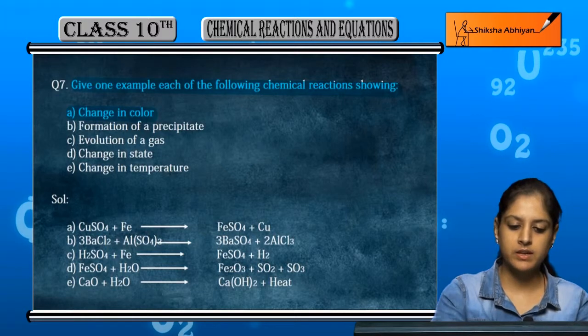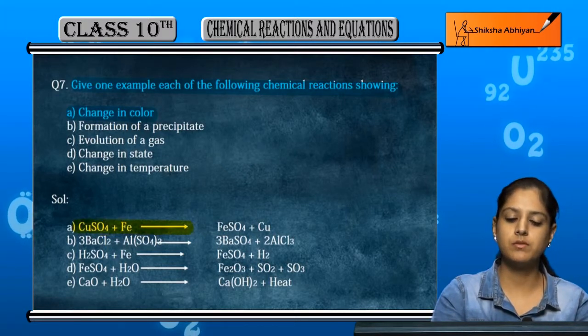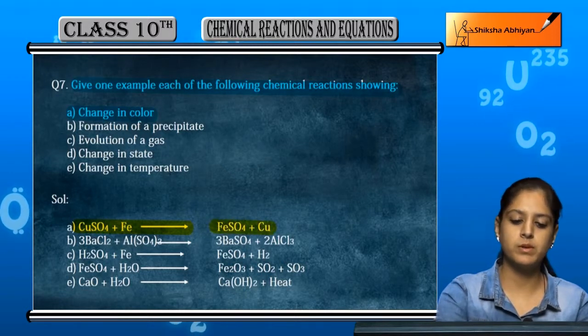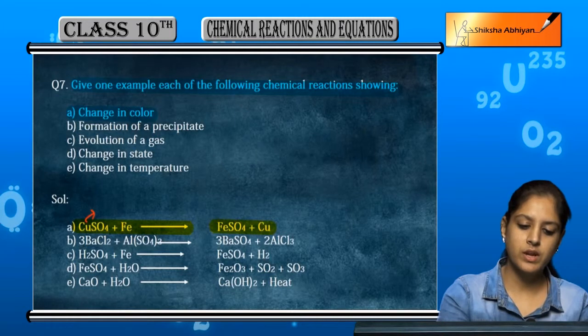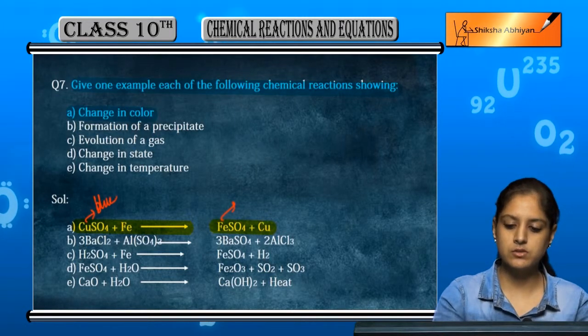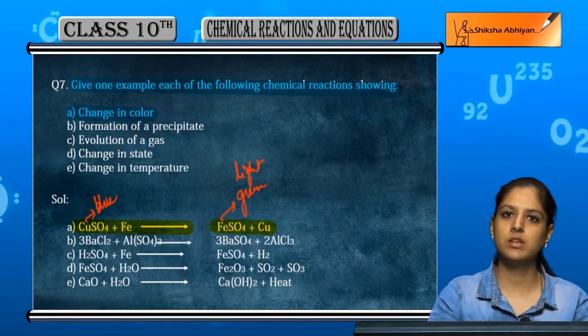It is a reaction which shows color change. The example is CUSO4 plus Fe, copper sulfate and iron. When we react Fe, the CUSO4 is blue color. After this reaction FESO4, it becomes a light green color, so it becomes green from blue.